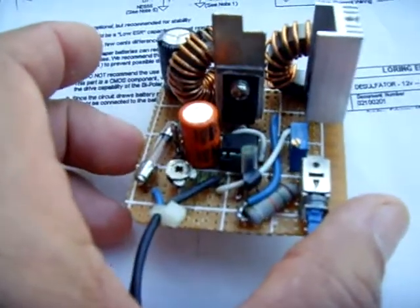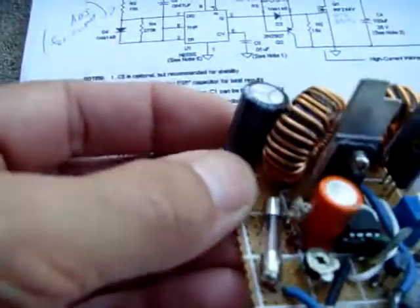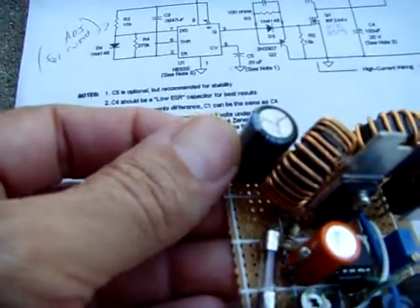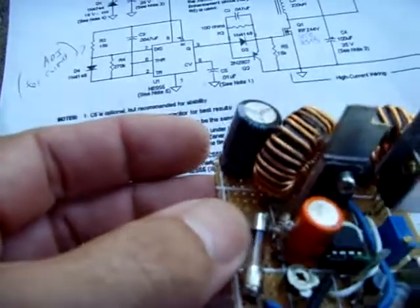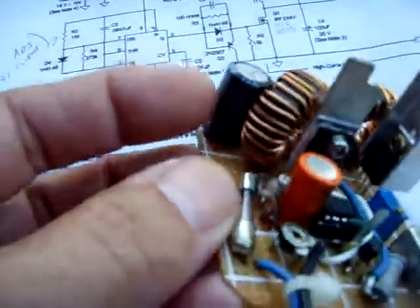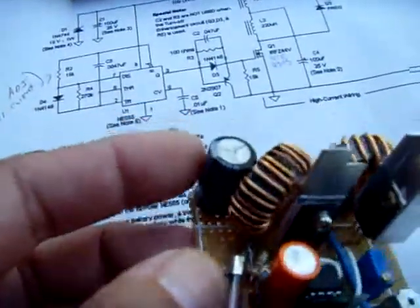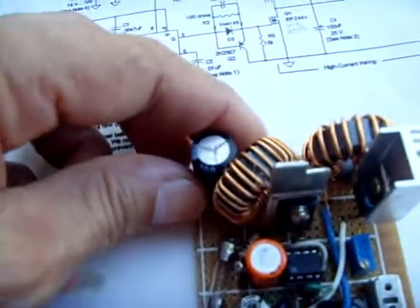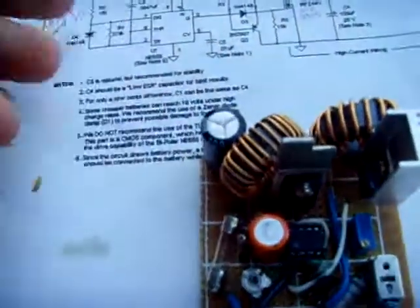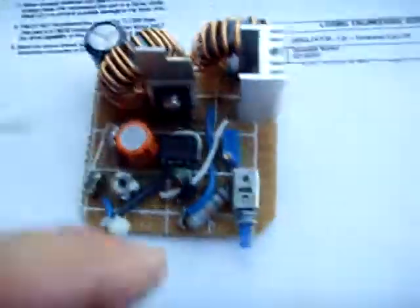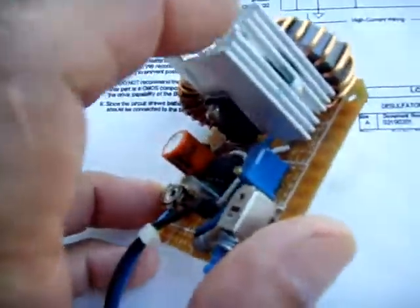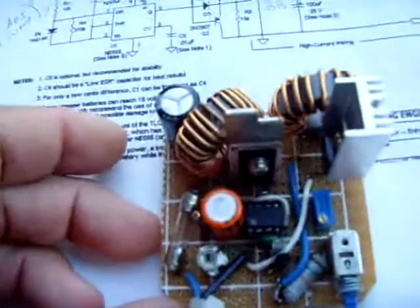This capacitor right here is supposed to be a low ESR, which refers to the resistance of the capacitor—a low resistance, otherwise it'll heat up. I did use a low ESR and it does get very warm, which according to the person that made this circuit says it's supposed to get warm. This MOSFET gets very warm. I ran it for like six to eight hours on a battery.